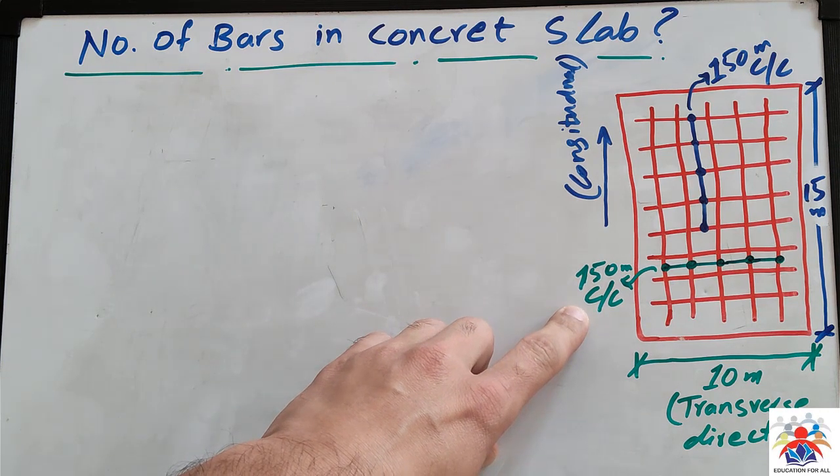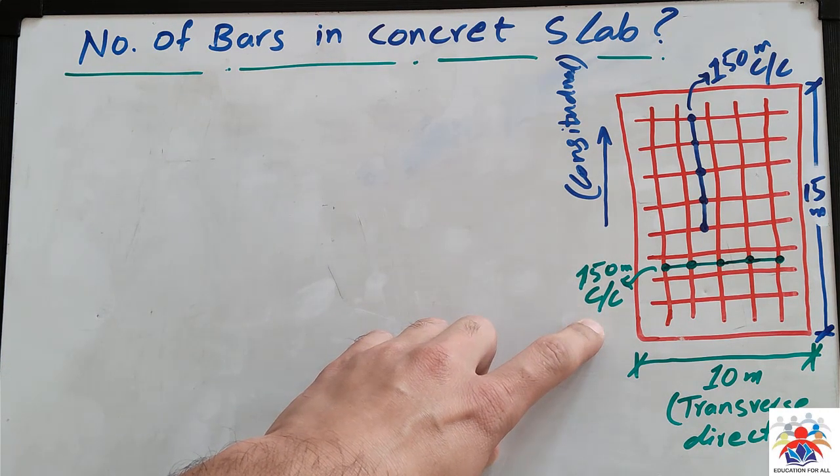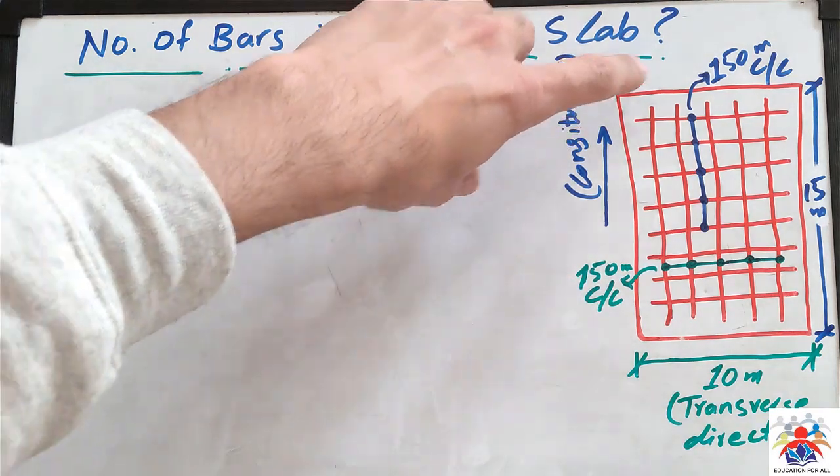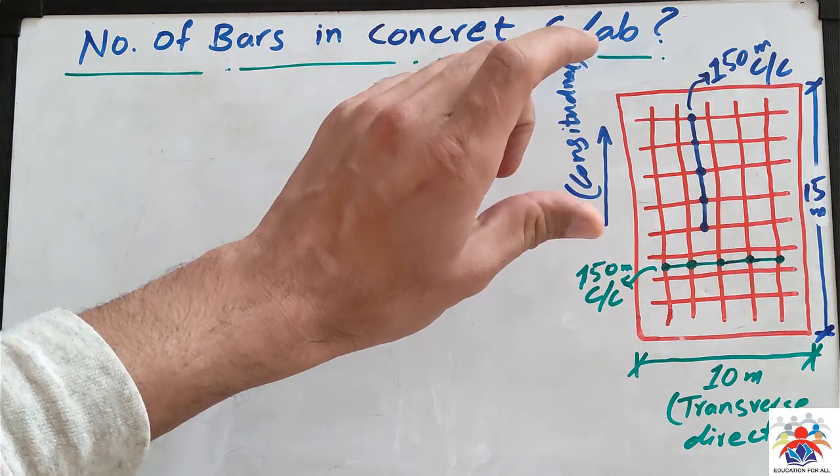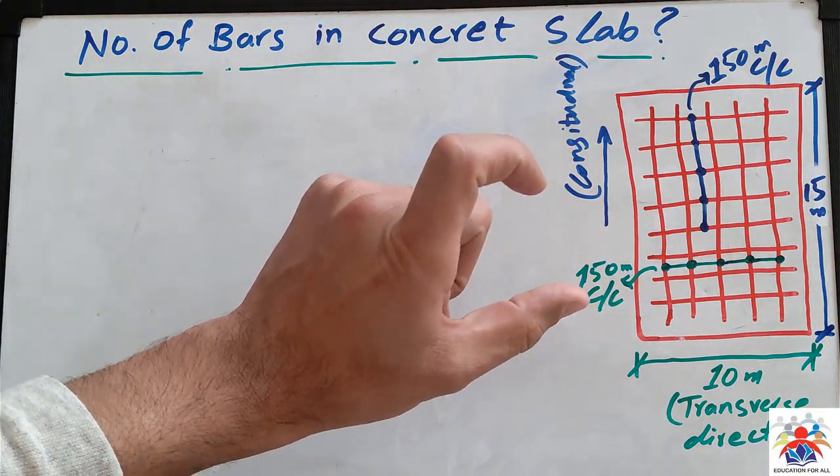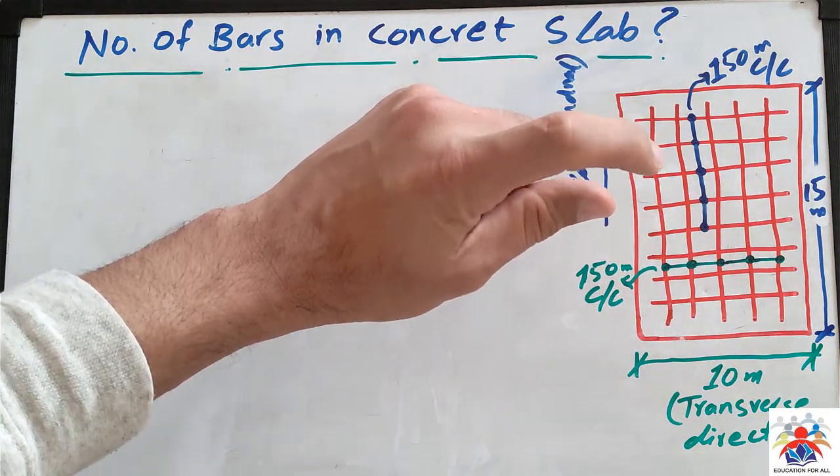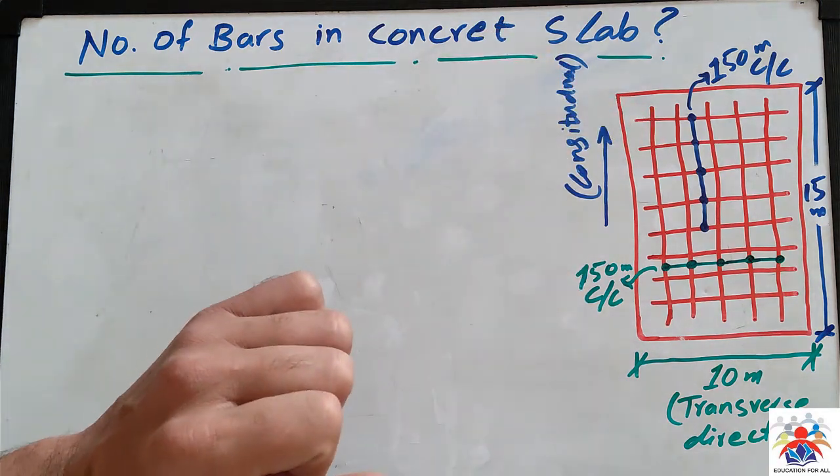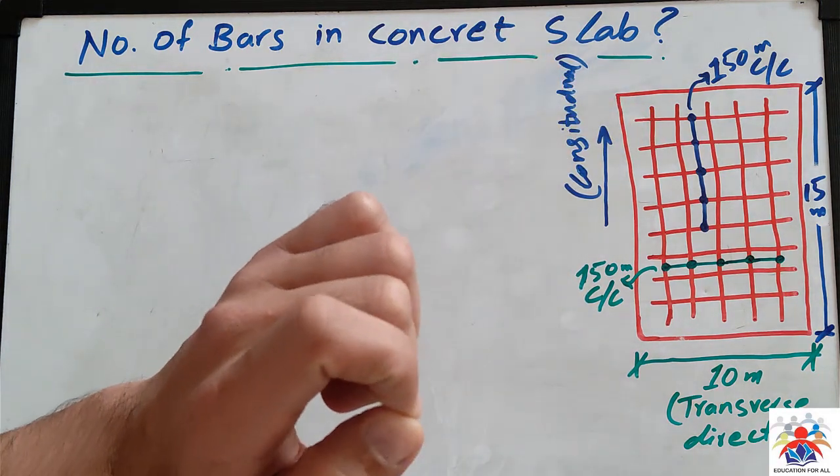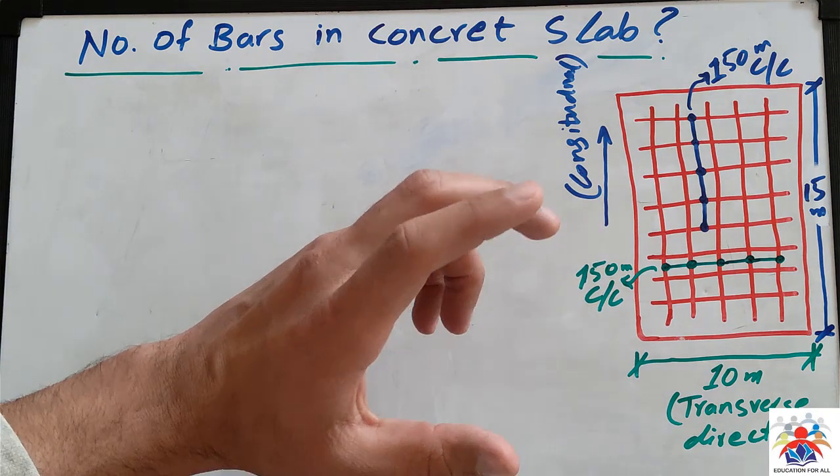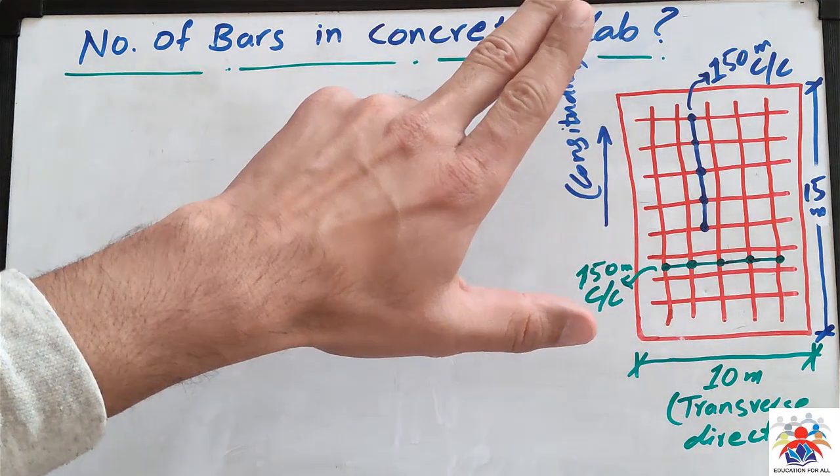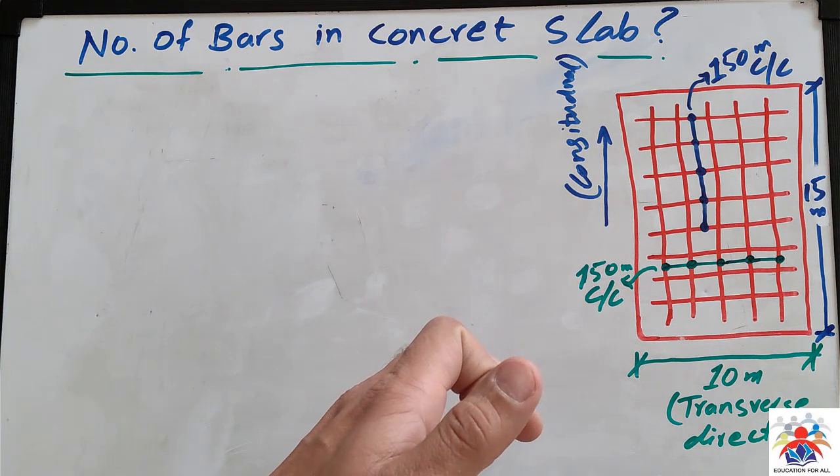As you can see it says in green color 150 millimeter center to center and in blue color also 150 millimeter center to center. So that means our bars are placed at 150 millimeter center to center. But the question is how many bars, how many number of bars we will have in the direction of 15 meter and how many number of bars we will have in the direction of 10 meter.